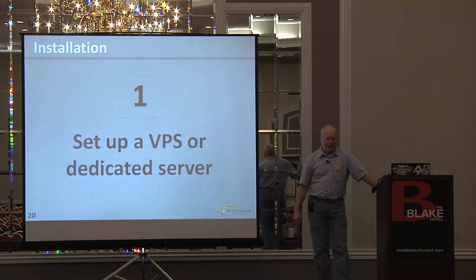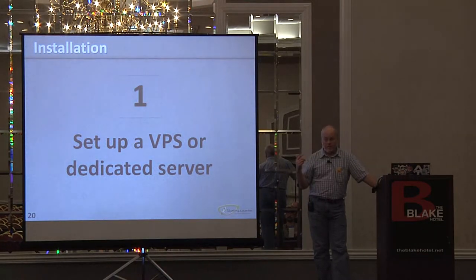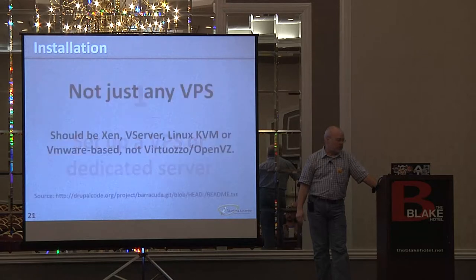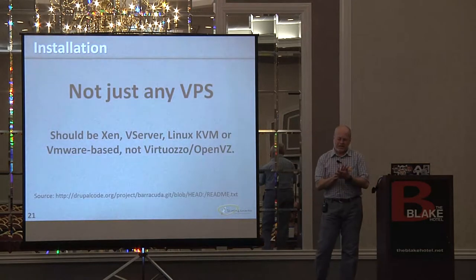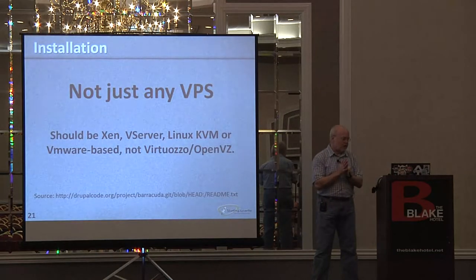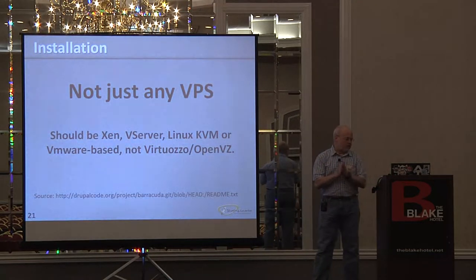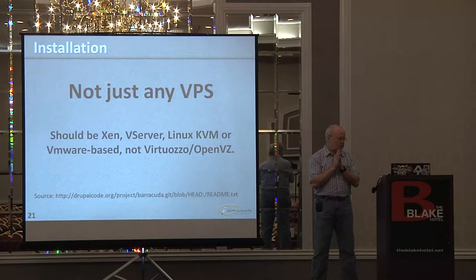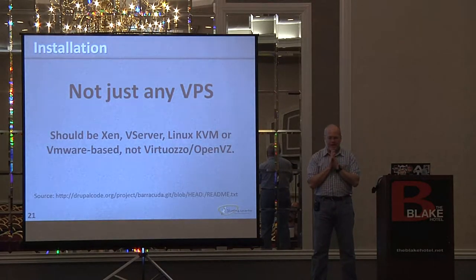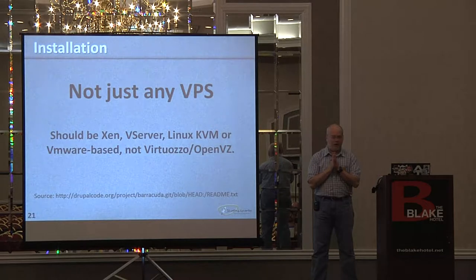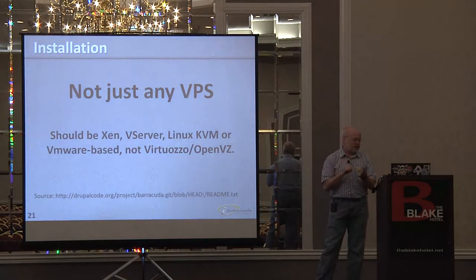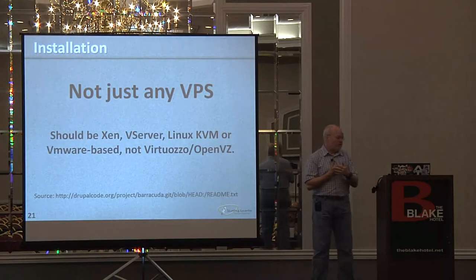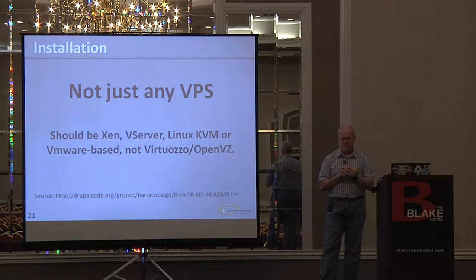Here's step by step how to set up the VPS — or a dedicated server — to run the Aegir setup with Barracuda and Octopus. First, it's important to know that not just any VPS will work. There are some out there running Virtuozzo or OpenVZ that do a few things with swap files. You want to make sure it's Xen, vServer, Linux KVM, or VMware based. The three operating systems recommended are Debian Squeeze, which is the latest version of Debian, and then the last couple of versions of Ubuntu.